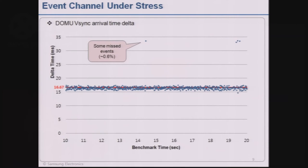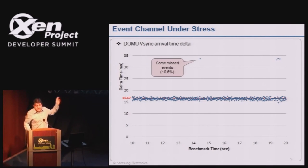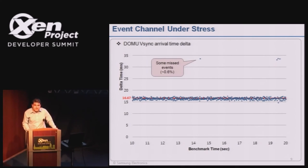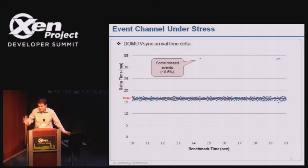For the V-sync reliability, we measured V-sync arrival in DOM0 and sent it across the event channel into DOMU. Over about 10 seconds of benchmark — 600 V-syncs — we measured the interval between consecutive V-syncs. Most are within 16.6 milliseconds, centered around 16 milliseconds with a small delay, which is fine — we can handle jitter. But a very small number, less than 0.6 percent, appear to be missing. This could be a code issue or an inherent system problem requiring further investigation. Still, 99.4% are going through fine — that's pretty good.